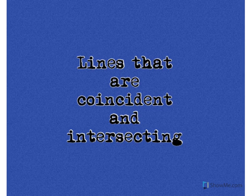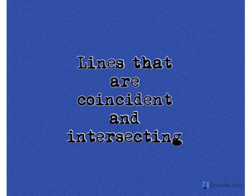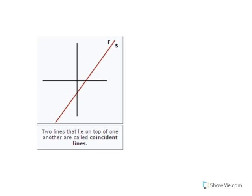Lines that are coincident and intersecting. Two lines that lie on top of one another are called coincident lines.